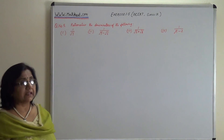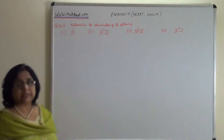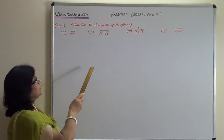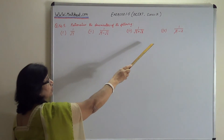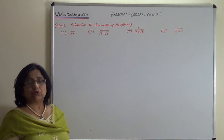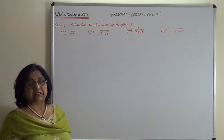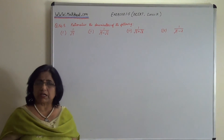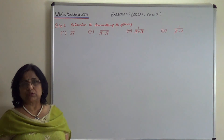We are going to see that the first part has a monomial denominator. But the second part, third part, and fourth part have a binomial denominator — that means two terms in the denominator. For the first part, the monomial denominator is equal to root 7.